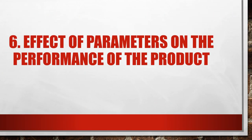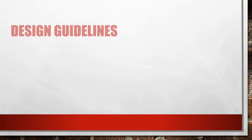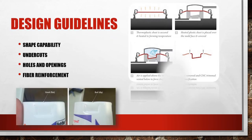Chapter 6: Effect of the parameters on the performance of the product. Design guidelines: Shape capability is limited to simple shapes of constant cross section. Undercuts are possible but increase tooling costs considerably. Holes and openings are not possible without additional processes. Fiber reinforcement may further limit formability.